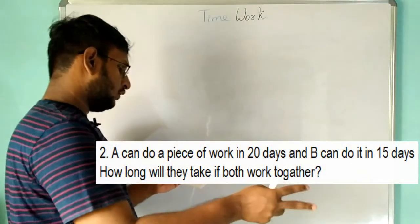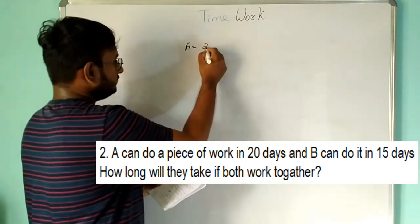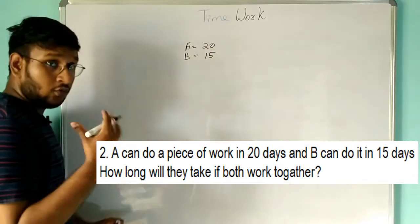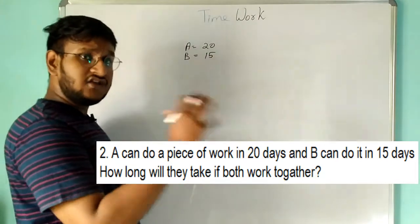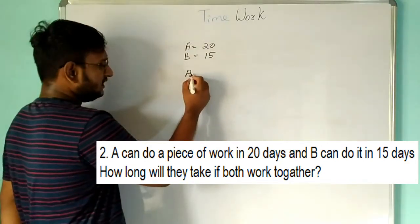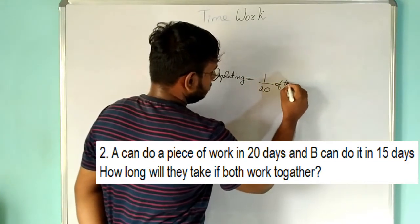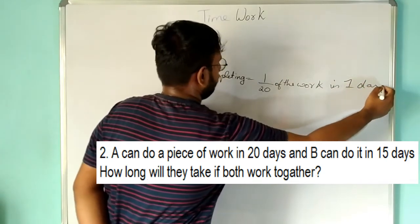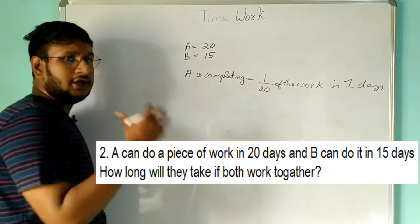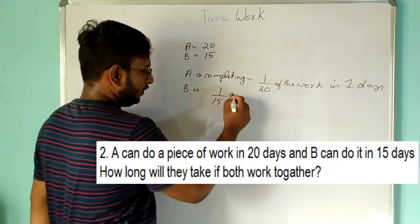Second problem: A can do a piece of work in 20 days, B can do it in 15 days. How long will it take if both work together? A is completing 1/20 of the work in one day because he takes 20 days for the whole work. B is completing 1/15 of the work in one day.